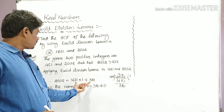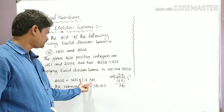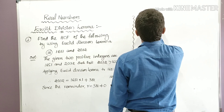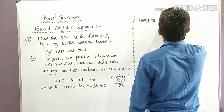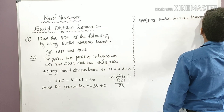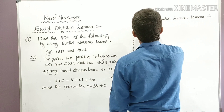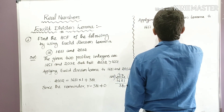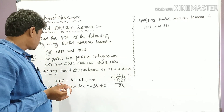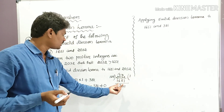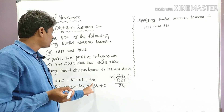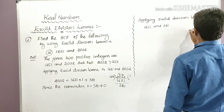Applying Euclid's Division Lemma to 1651 and 381. Since the remainder was not zero, we now divide 1651 by 381. The previous step gave us 2032 = 1651 × 1 + 381, so now we apply the lemma to these two numbers.